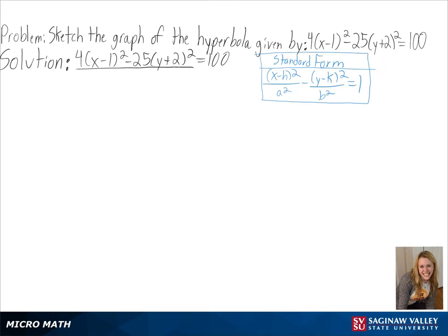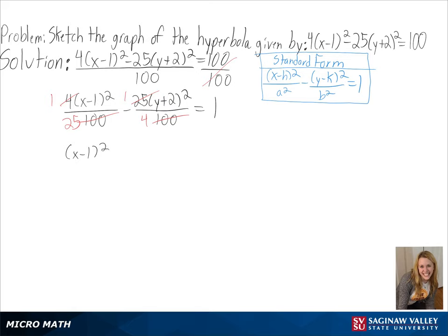The first part of our solution is to put our equation in standard form. To get our equation equal to 1, we must divide both sides by 100. We can then split our fractions up and simplify this since 4 over 100 is also equal to 1 over 25 and 25 over 100 is also equal to 1 over 4. So putting our equation in standard form, we get x minus 1 squared over 25 minus y plus 2 squared over 4 equals 1.